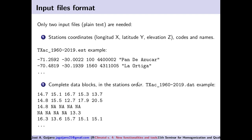The format of the input files has not changed — it is the same as in the previous versions. There are only two files, which are plain text separated by spaces. The station coordinates file has every line containing: x (longitude), y (latitude), elevation, code of the station, and the name. Names that have spaces should be quoted. Coordinates must be in degrees with decimals and elevations in meters. The other input file contains the data, with all data in blocks from the first station to the last in the same order as in the stations file.